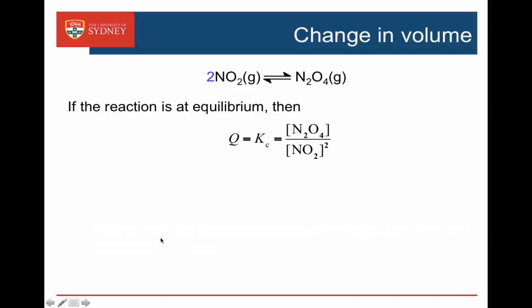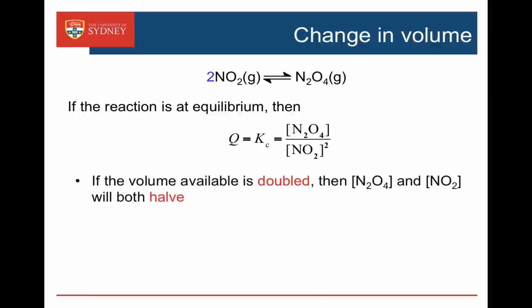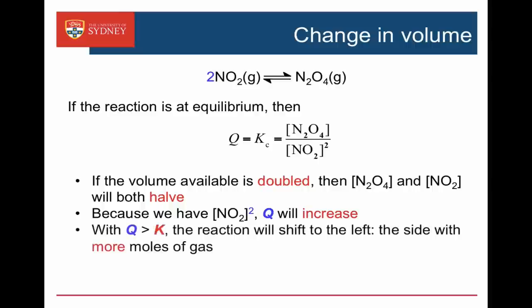Now let's double the volume. If we double the volume, since C equals N over V, the concentrations will both halve — the N2O4 concentration will halve, and so will the NO2 concentration. But again, because we have NO2 squared in our formula for Q, if NO2 is halving, that effect will be bigger because we're squaring it, and Q will increase. If Q increases, then it will be bigger than K, and the reaction will shift to the left — to the side with more moles of gas.